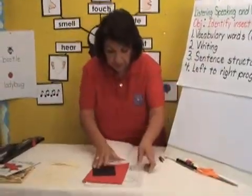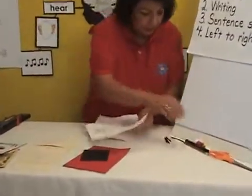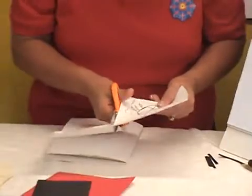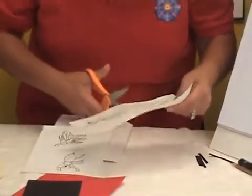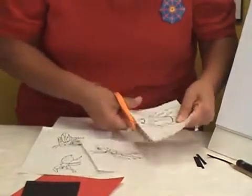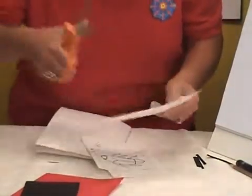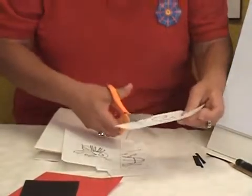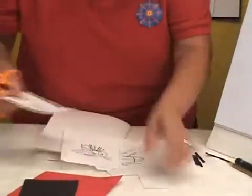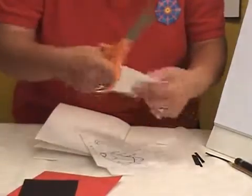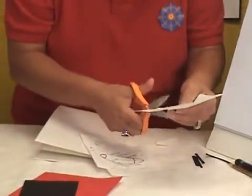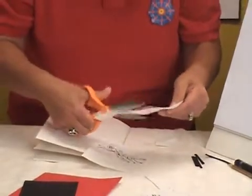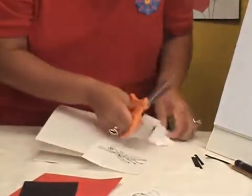Then you take the insects and you just cut through the middle, and then cut the other half, and then cut it off. You can also cut a little bit off so they'll fit in their little booklet — just cut it off like that. Continue cutting.